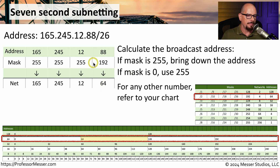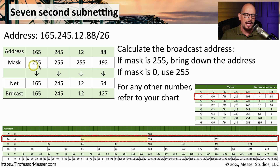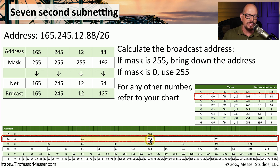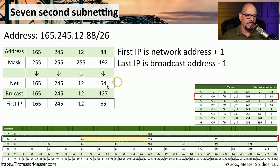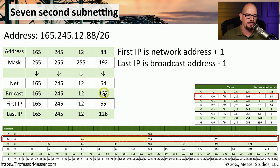To calculate the broadcast address, we look at the subnet mask. If it's 255, bring down the address values; if it's zero, use 255. Our subnet mask doesn't have any zeros in this case, so we refer to our chart. We know this is the range with 64 addresses per subnet and that .88 fits into the second block. The next block starts with 128, so the broadcast address must be one prior: 127. The broadcast address is 165.245.12.127. The first usable IP is 165.245.12.65, and the last IP is 165.245.12.126.